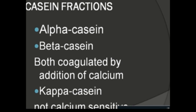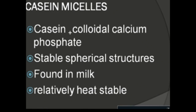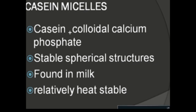In milk, casein fractions are associated with each other and, along with colloidal calcium phosphate, form a stable spherical structure known as casein micelles. These casein micelles are formed by colloidal calcium and the casein fractions, and can be separated from the rest of the milk by chemical processes or centrifugation. Casein micelles are relatively heat stable, contain a high number of proline residues, do not contain disulfide bridges, have relatively little tertiary structure, and are relatively hydrophobic in nature.